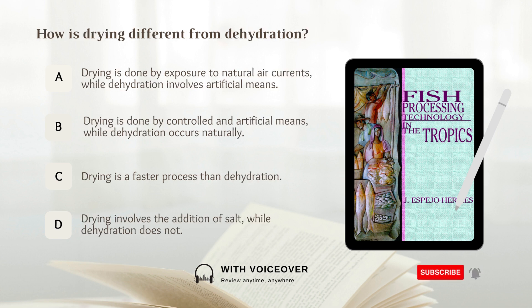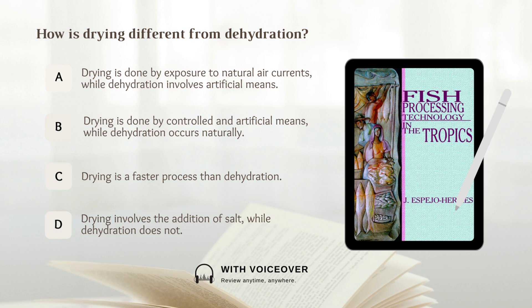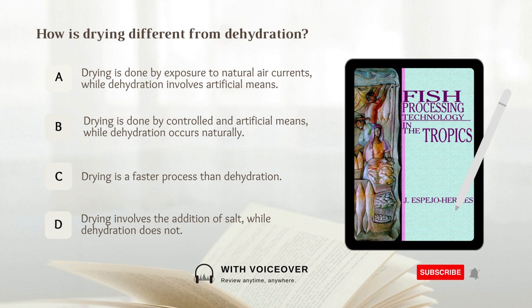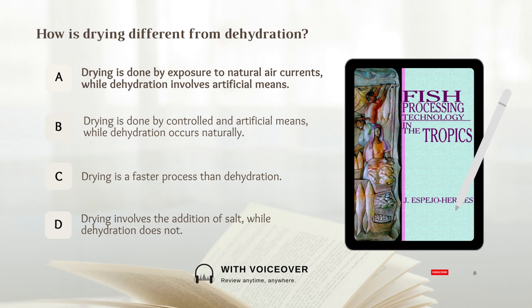How is drying different from dehydration? A. Drying is done by exposure to natural air currents, while dehydration involves artificial means. B. Drying is done by controlled and artificial means, while dehydration occurs naturally. C. Drying is a faster process than dehydration. D. Drying involves the addition of salt, while dehydration does not. Answer: A. Drying is done by exposure to natural air currents, while dehydration involves artificial means.